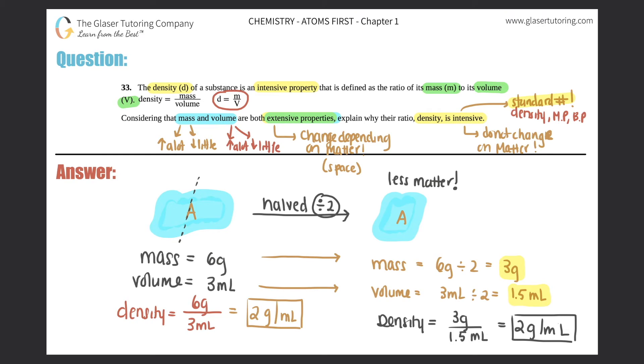I get the same number. I get two grams per mils for a larger amount of mass and volume, but I get the same amount, same density, for the same substance that has less. That's why it's intensive. It does not matter what your mass and your volume is, you will still get that same standard amount.